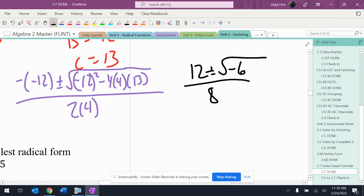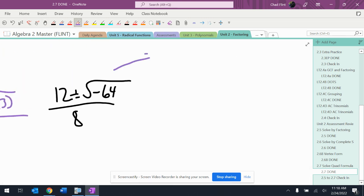Negative 64. Okay, so now this will simplify to 8i. So this gives me 12 plus or minus 8i over 8.